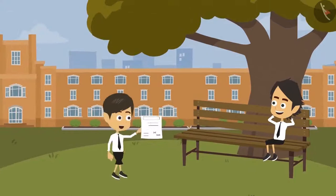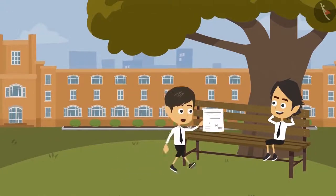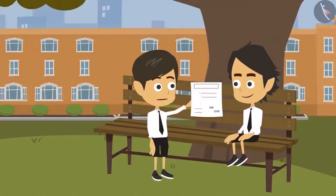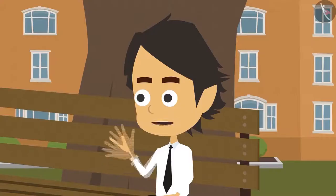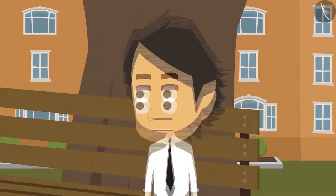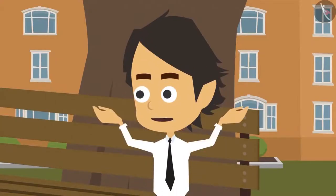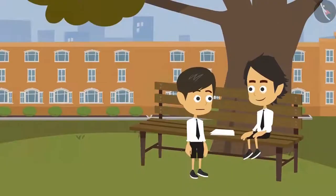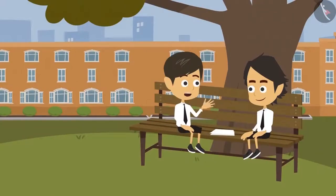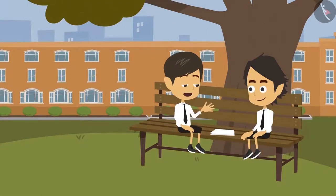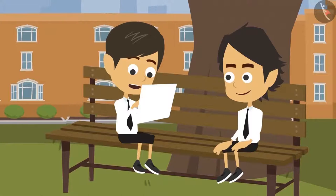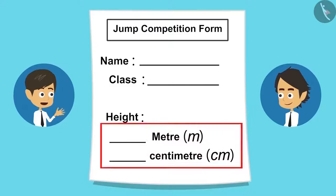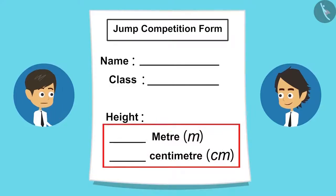Ayushman, the teacher has given this form. We have to write our height in this so that she can put us in the correct group. But what is the relation between our height and long jump? It is possible that tall people can jump longer, so groups are made as per people's height. Height is to be written in meters and centimeters in this.